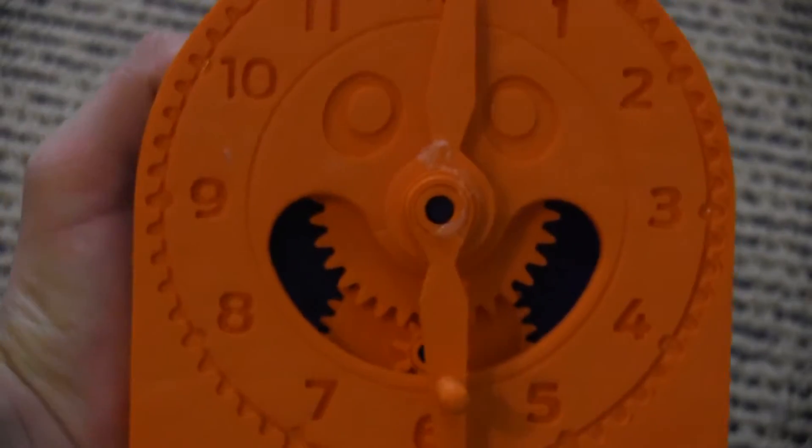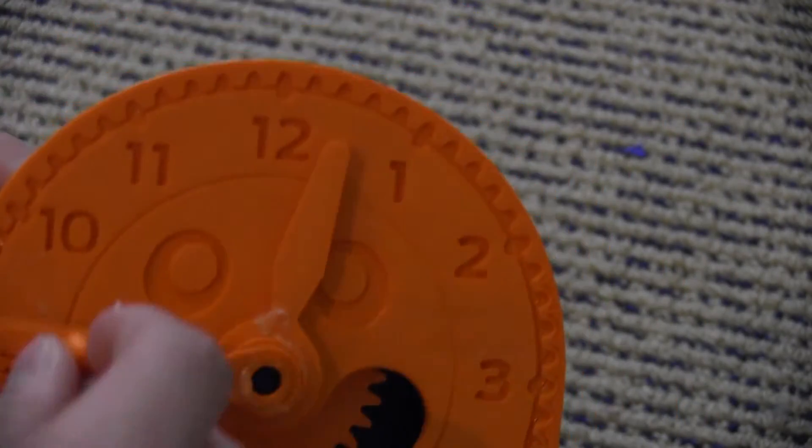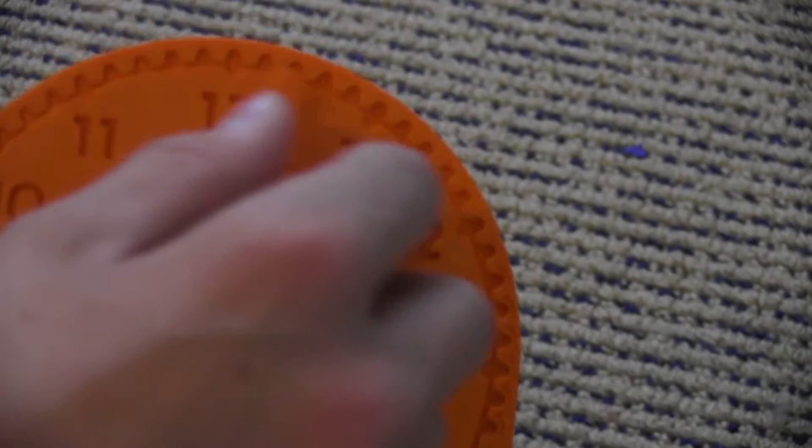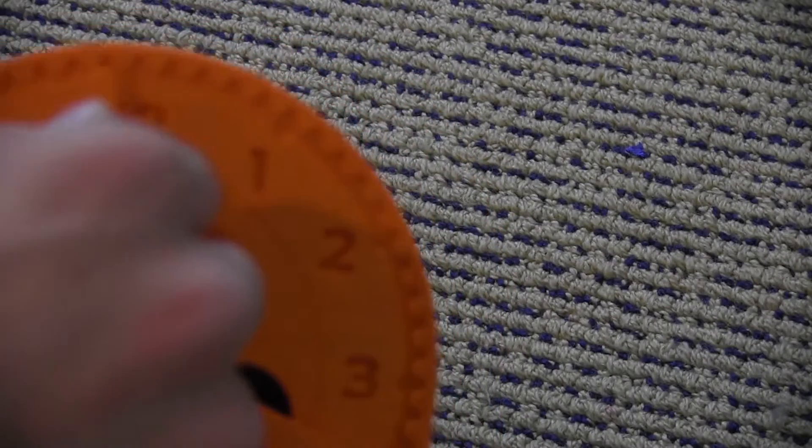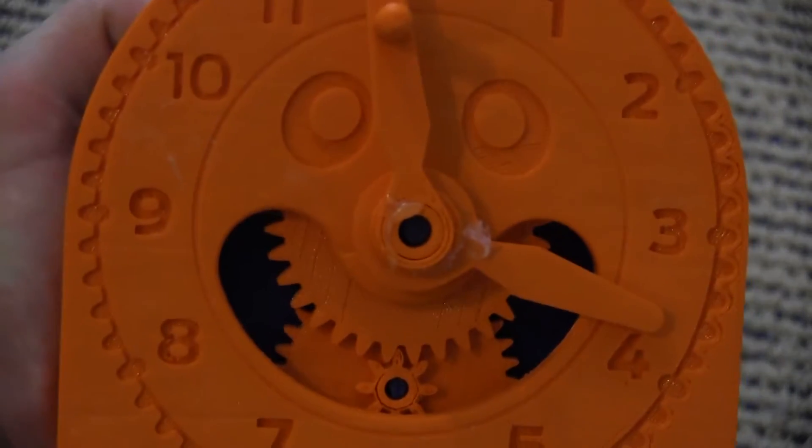And anyways, this is a very cool clock because it teaches kids how clocks work. So if you move the wheel, you can see that the outer hand is moving, and you can see the gears moving too.